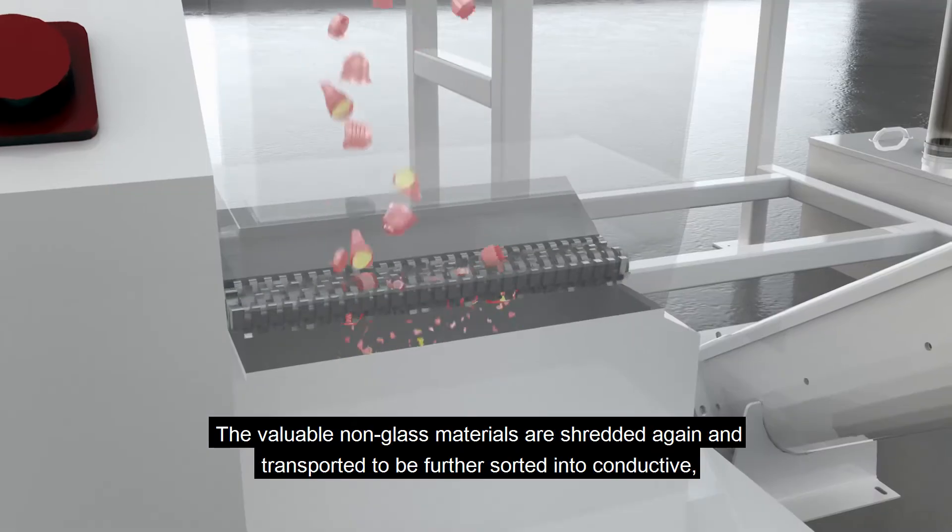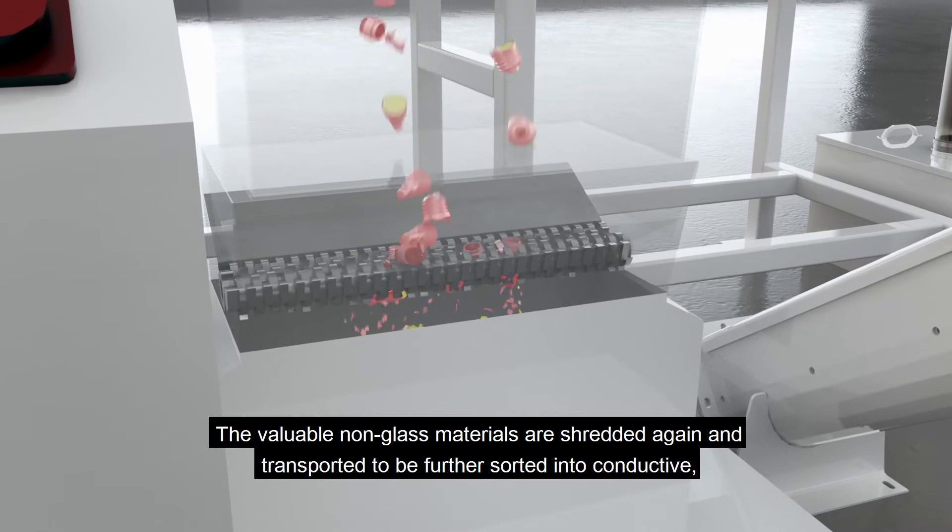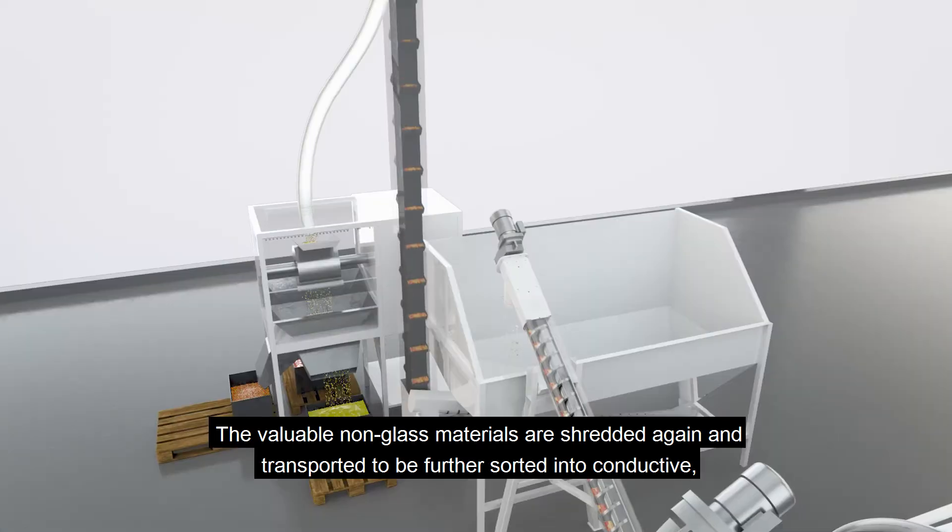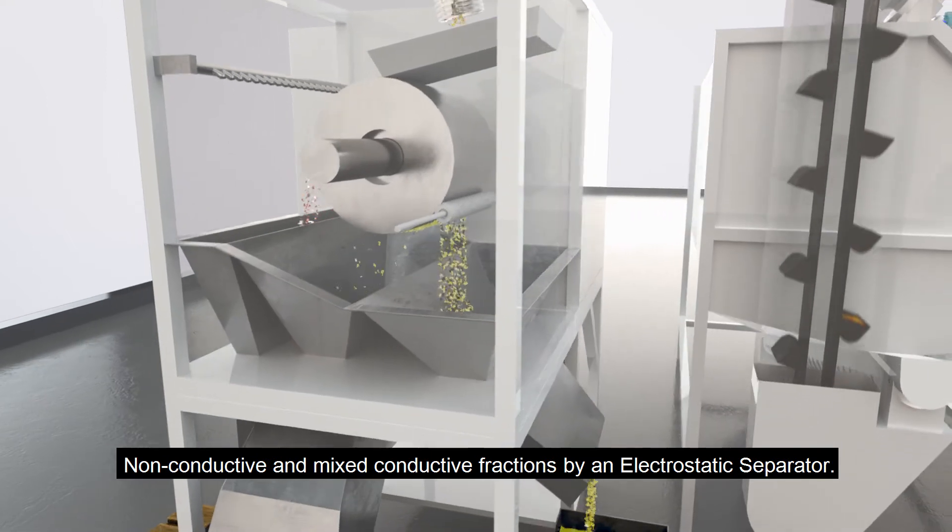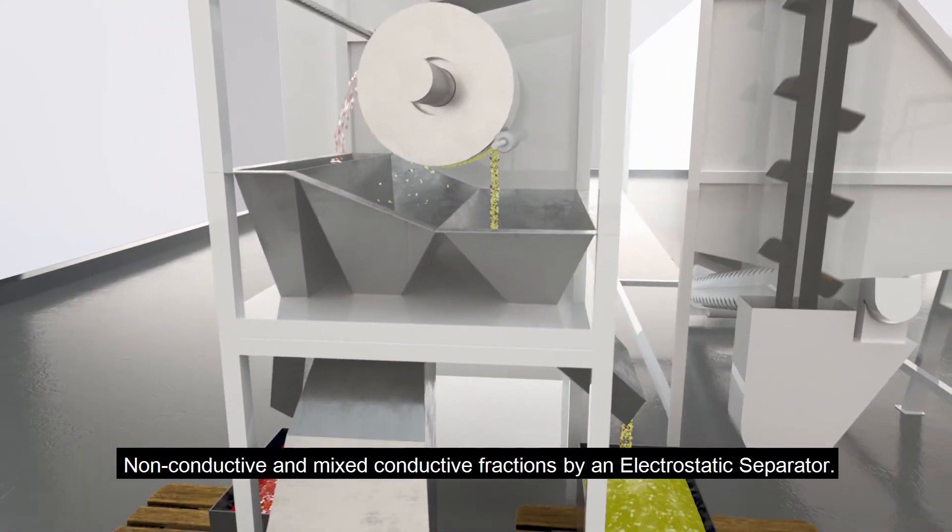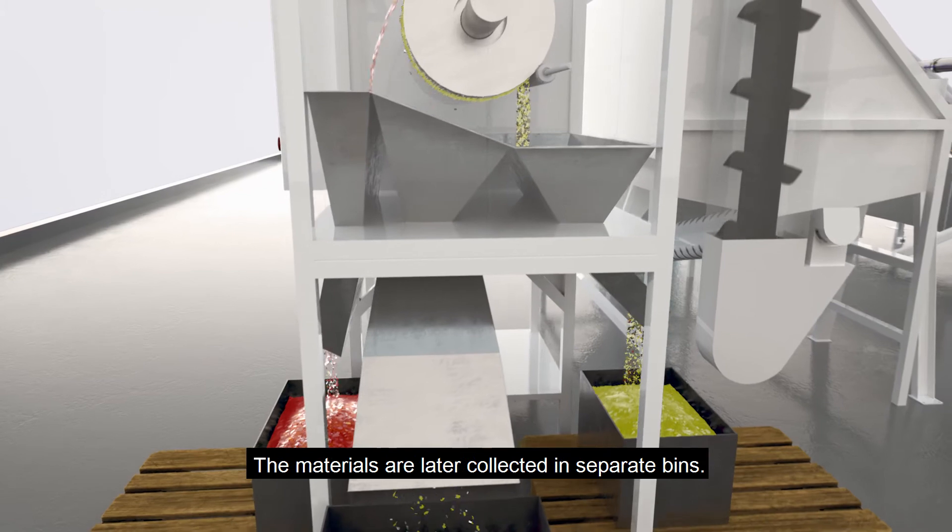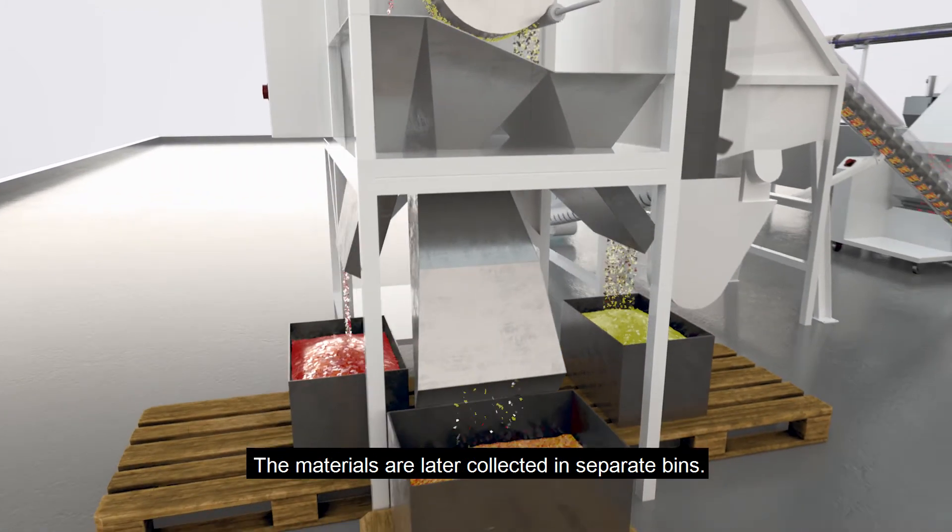The valuable non-glass materials are shredded again and transported to be further sorted into conductive, non-conductive and mixed conductive fractions by an electrostatic separator. The materials are later collected in separate bins.